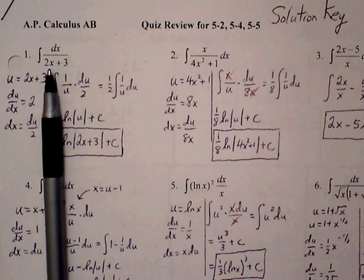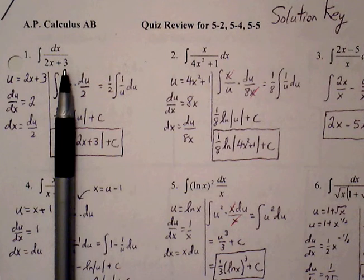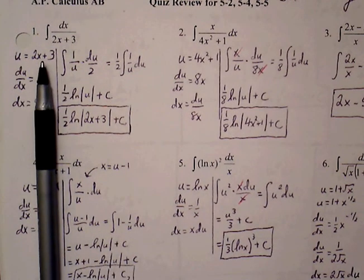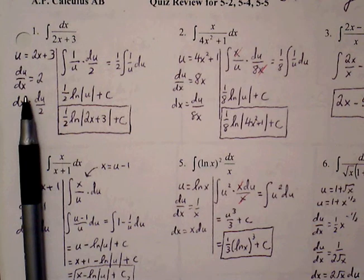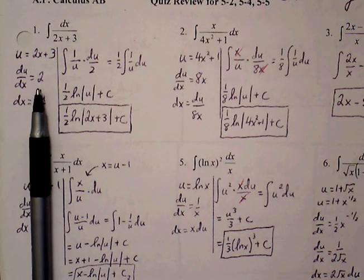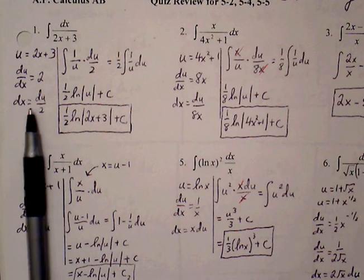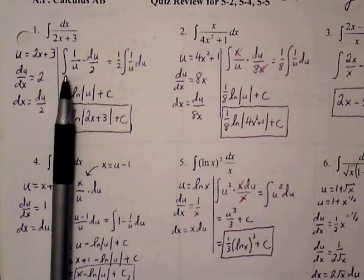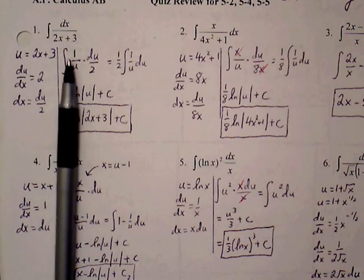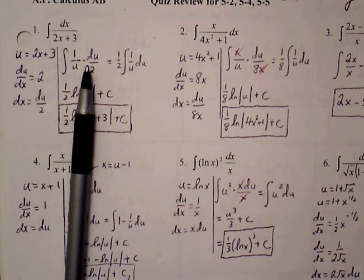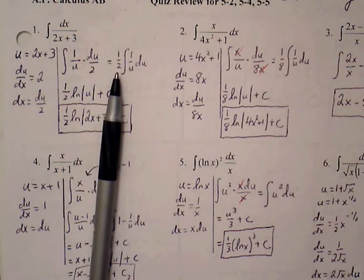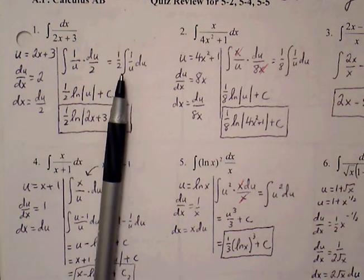For our u-value, we can try the denominator — letting u equal 2x plus 3. The derivative du/dx equals 2, since 2x goes to 2 and 3 goes to 0. Solving for dx, we get dx equals du over 2. Making our substitution, the denominator gets replaced with u, dx gets replaced with du over 2, and pulling the 2 out as a coefficient gives us one-half times the integral of 1 over u du.